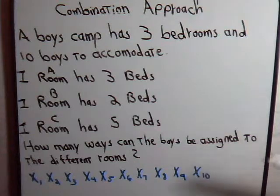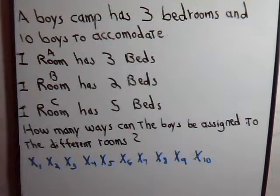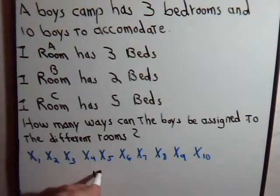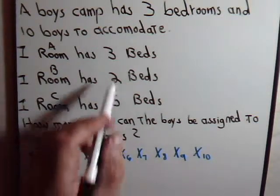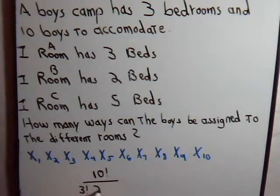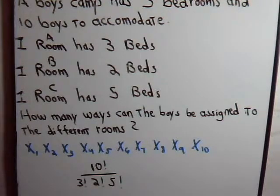So the type of permutation problem that we're thinking of is not just 10 factorial, but it's 10 factorial divided by 3 factorial times 2 factorial times 5 factorial. This then would be the number of permutations of the line when the boys are being selected three and two and five at a time. And then correspondingly, that would also be the number of ways that the boys can be assigned to the different rooms.